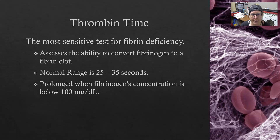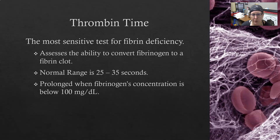A decreased fibrinogen is associated with disseminated intravascular coagulation. The last test is the thrombin time — the most sensitive test for fibrinogen deficiency. It assesses the ability to convert fibrinogen to a fibrin clot. The normal range is 25 to 35 seconds, and it can be prolonged when fibrinogen concentration falls below 100 mg/dL, which makes sense because you cannot have fibrin without fibrinogen. That wraps up our basics of hemostasis and coagulation — thank you.